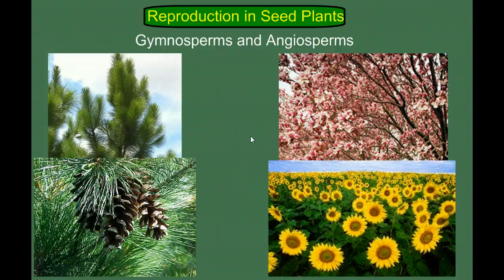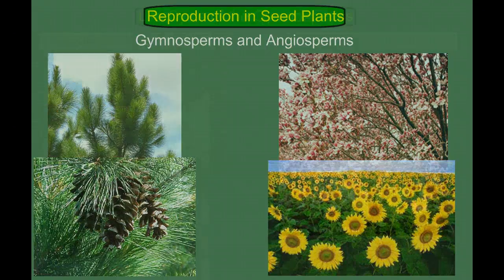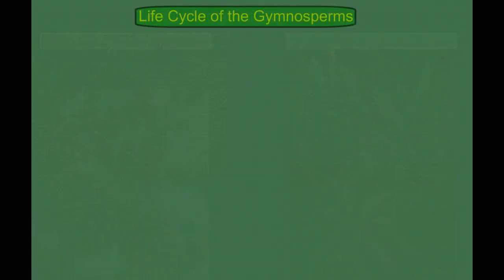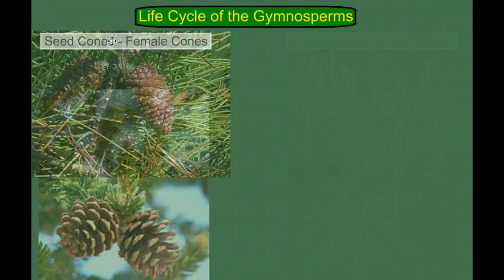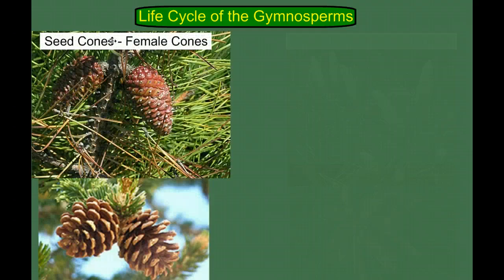I may turn this into a two-part video, depending on how long it takes me to get through the gymnosperms, but let's start there. So, the life cycle of the gymnosperm. Looking at the pine trees, we have the reproductive structures, the cones. But there's two types of cones. There are the female cones, or the seed cones, sometimes called the woody cones. They're what you think about when you kind of visualize a pine cone.